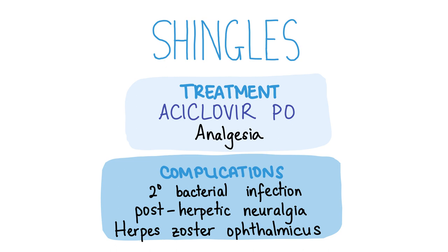The shingles vaccine is now offered to all patients between the ages of 70 and 79 in the UK. It is a subcutaneous injection that is live attenuated, therefore it cannot be given to patients who are immunosuppressed.